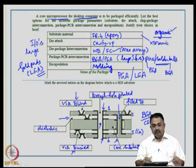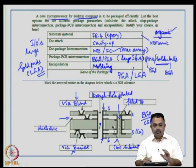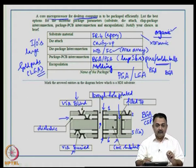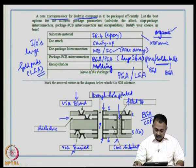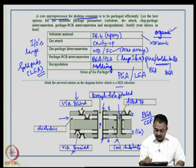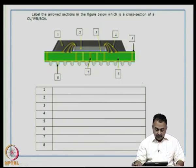Buried and blind vias are very difficult to repair and rework once assembled during fabrication. This concludes the identification of the HDI substrate cross-section.